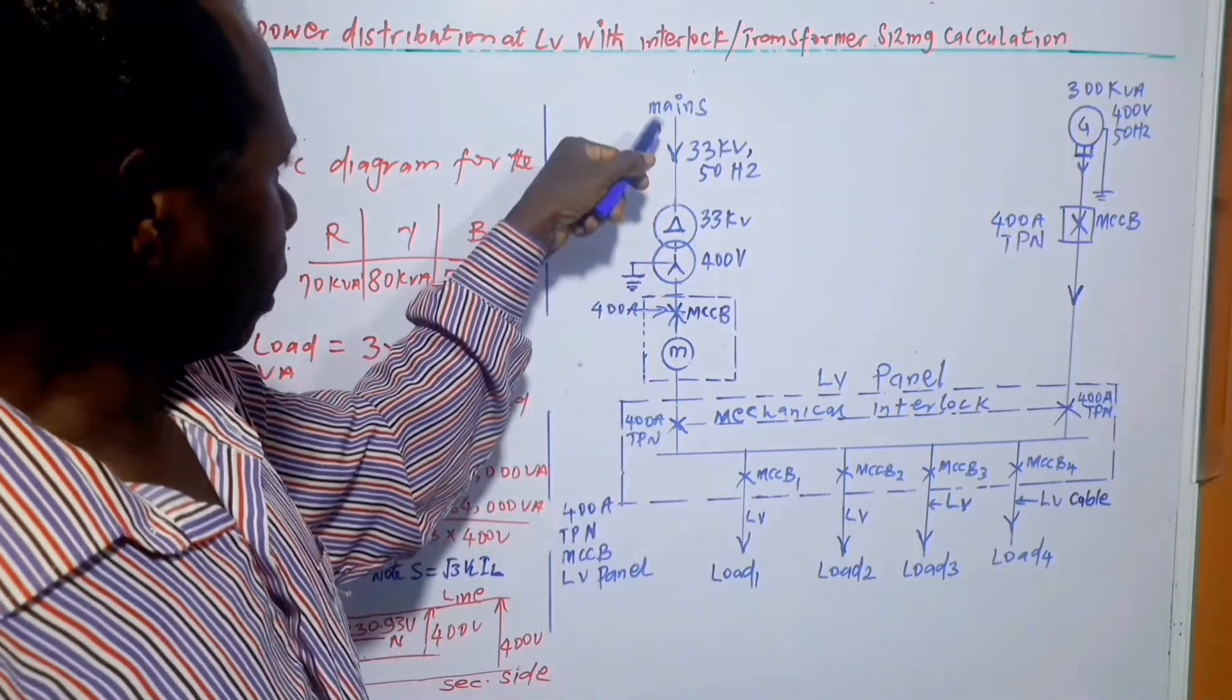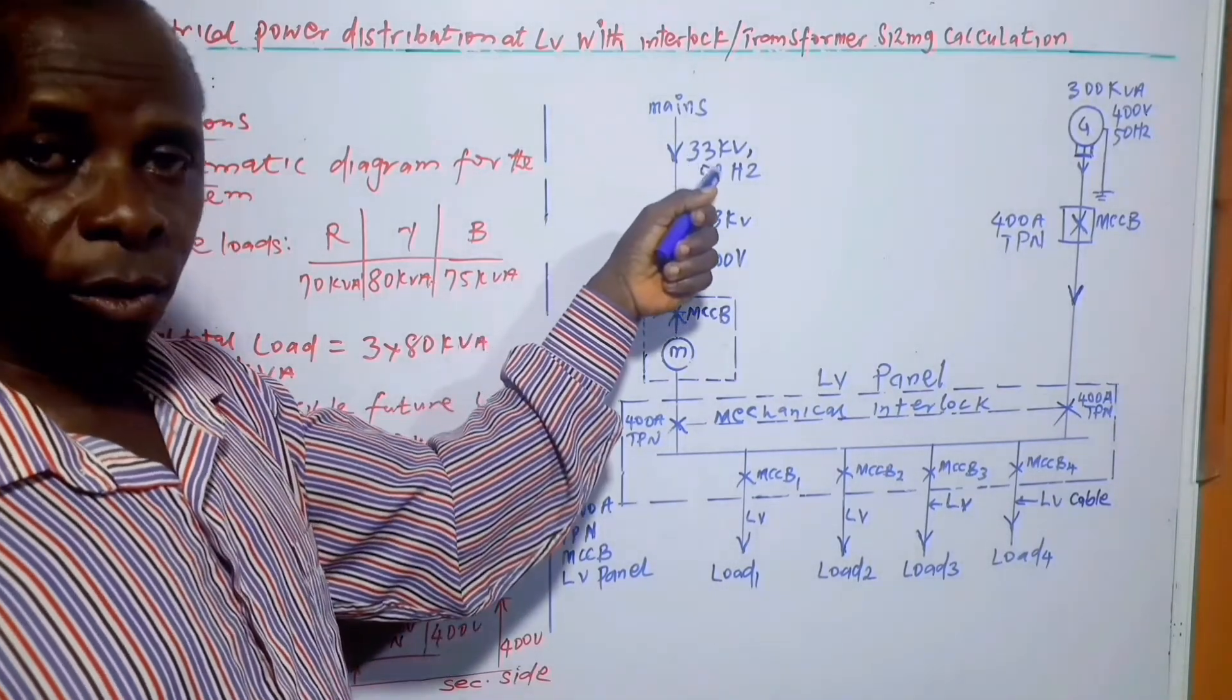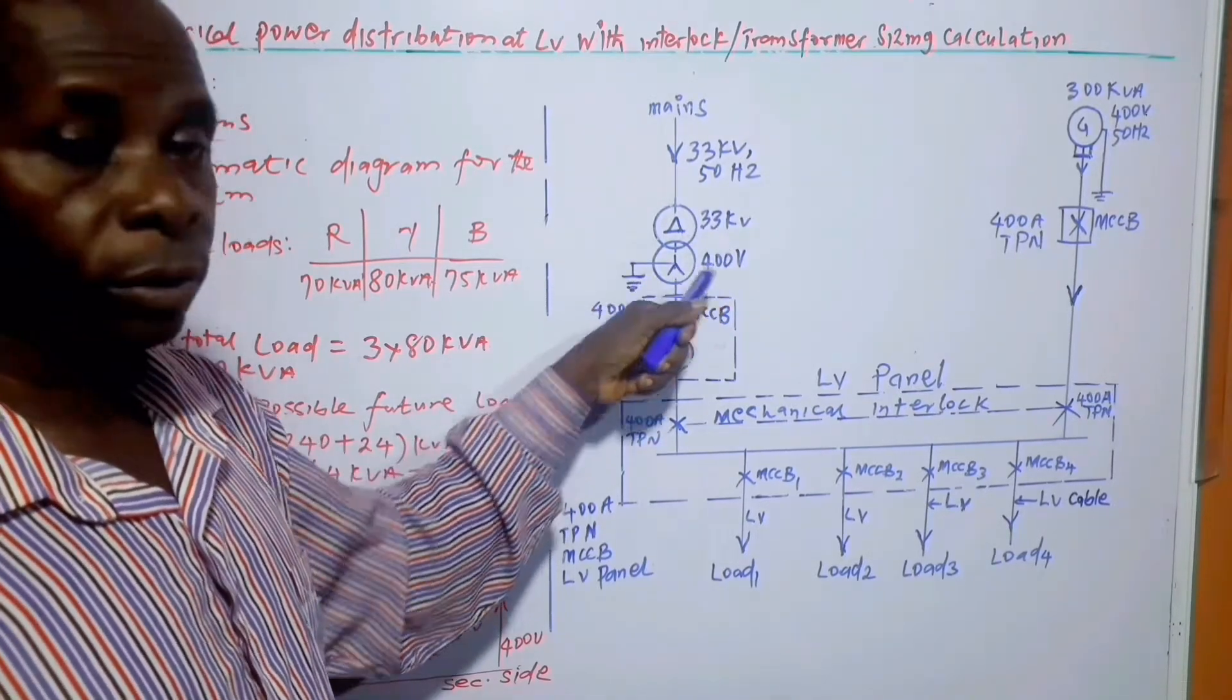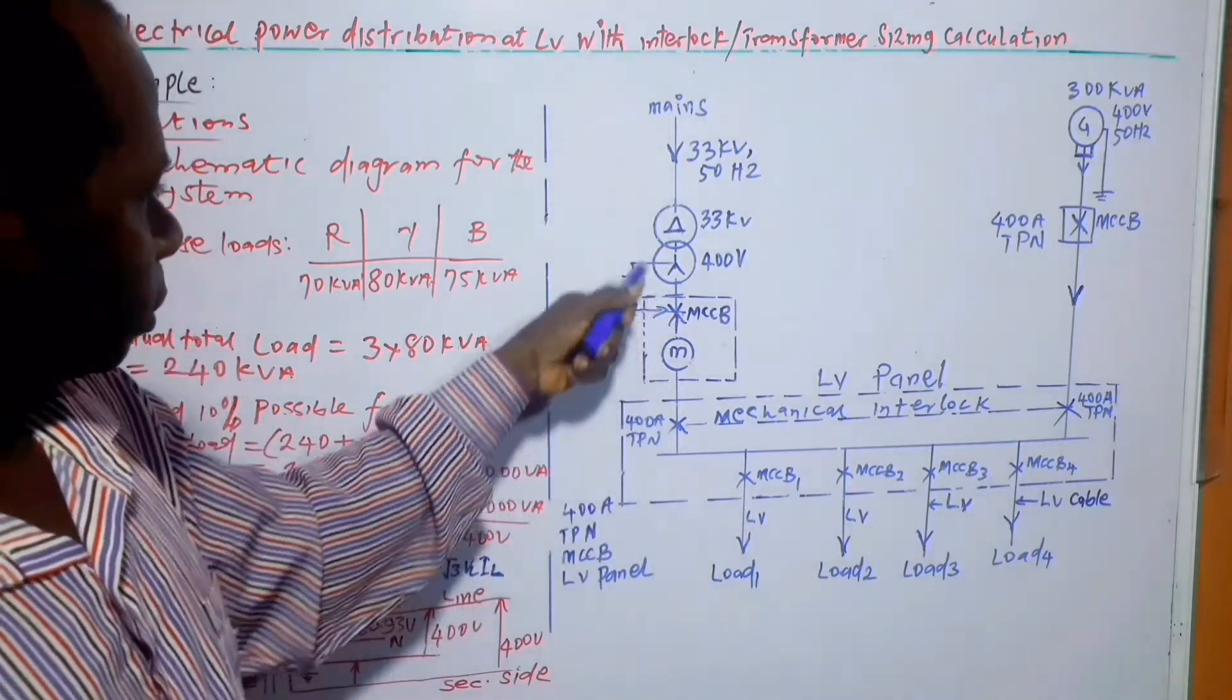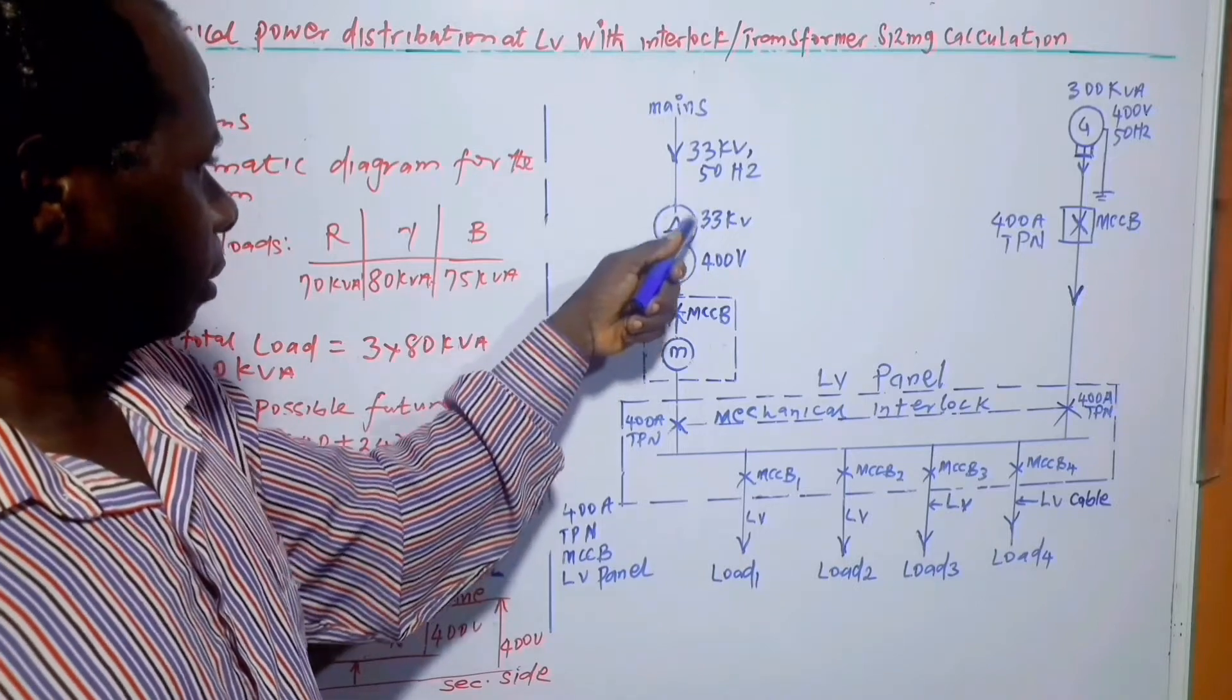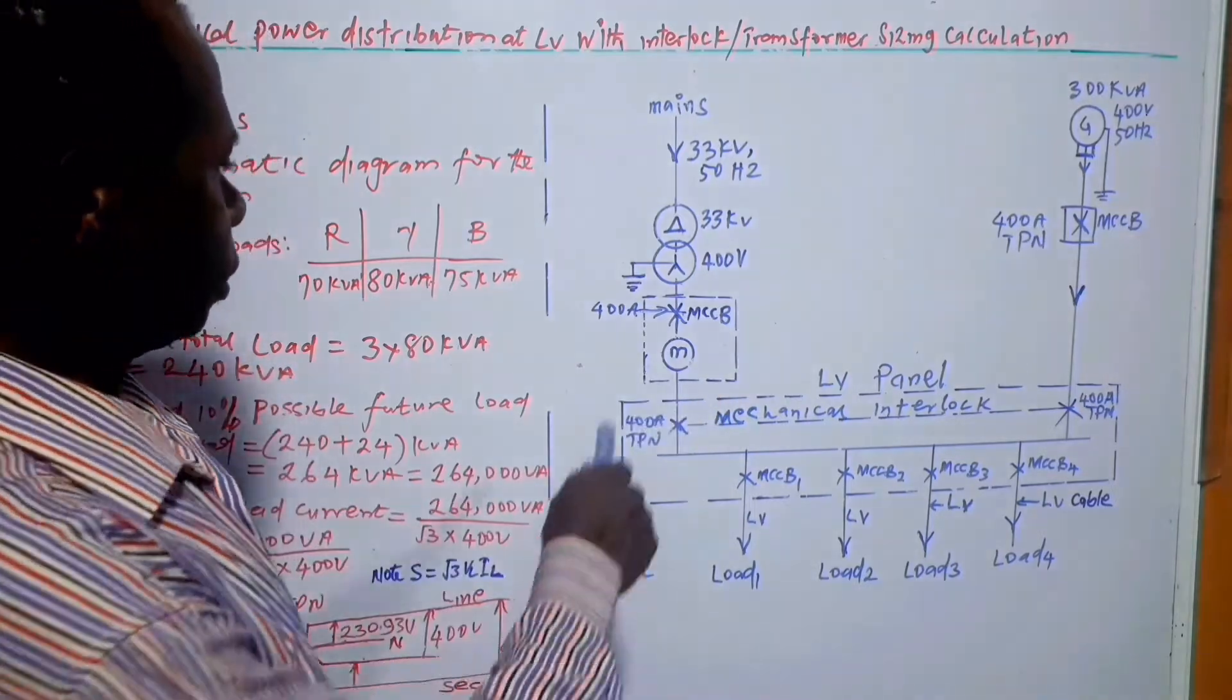So here we have the supply. Since the question says that the available voltage at the location of the building is 33 kV, that is why we are making use of 33 kV, 33 kV/400 volts transformer, a step-down transformer. Assuming it is 11 kV that is available, we would use 11 kV. Since we can get a transformer that can step 33 kV to 400 volts, that's why we are using it. And then we have the meter here in this box.